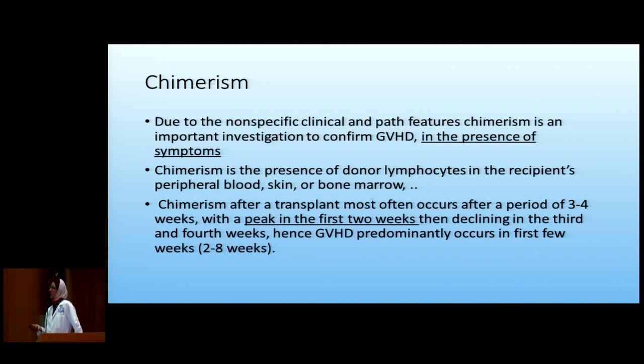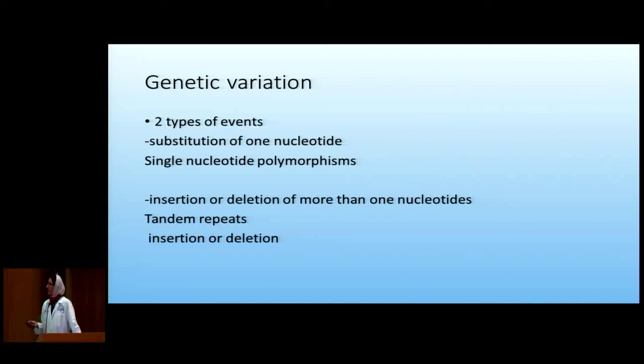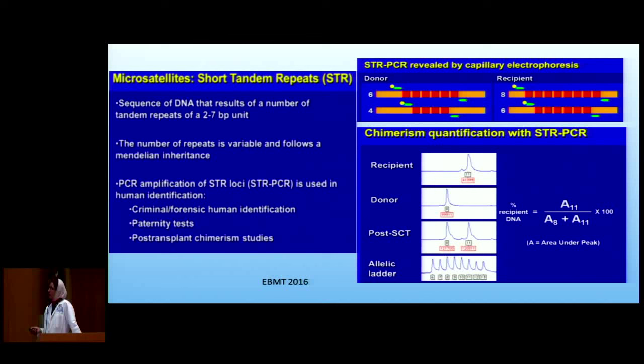Chimerism detects how much donor cells we have. At the first two weeks we have the peak, then they start going down if normal, but if there's GVHD they would persist. We look at genetic variation — there are different types: single nucleotide polymorphisms (SNPs), which are substitution of one nucleotide, and insertion or deletion of more than one nucleotide, which includes tandem repeats. We're mainly going to talk about the short tandem repeats, or STR.